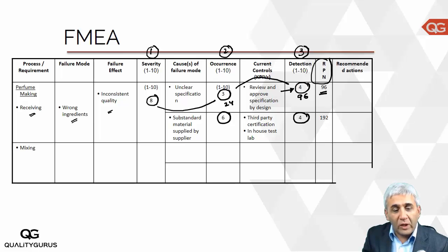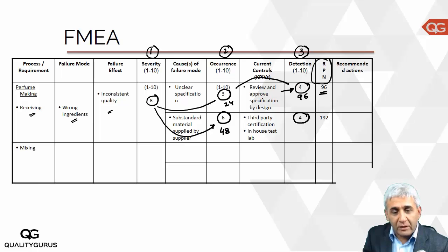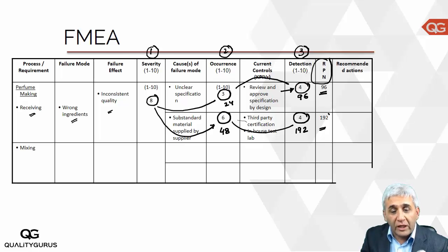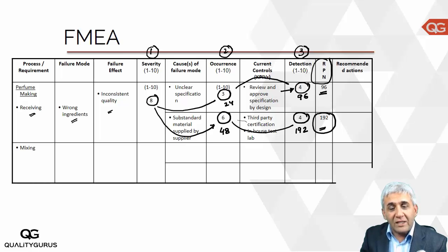Multiplying the three numbers: for the first cause, 8 × 3 × 4 = 96, which is the first RPN number. For the second cause, 8 × 6 × 4 = 192, which is the second RPN number. Based on just this one process step and two causes, we have two RPN numbers, and we can decide that 192 is more critical and needs to be addressed first.